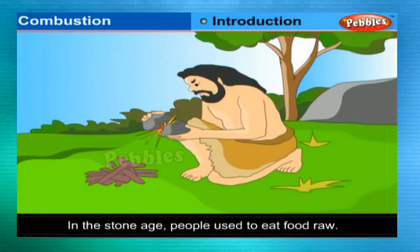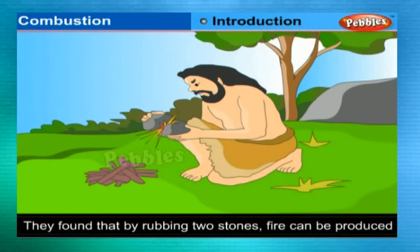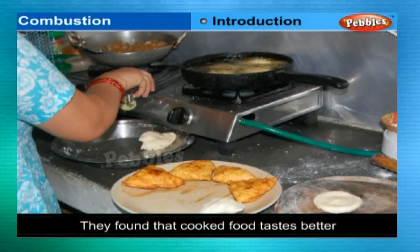In the Stone Age, people never knew the use of fire. They used to eat raw food. It was by accident they found that by rubbing two stones, fire can be produced.